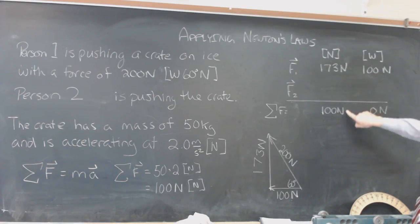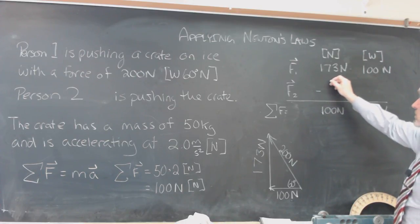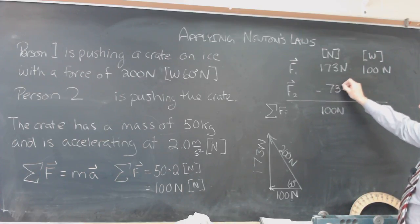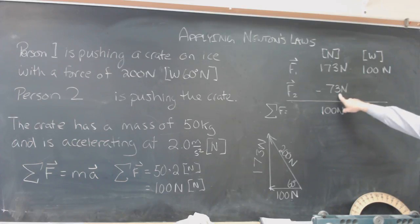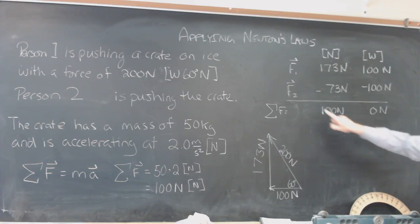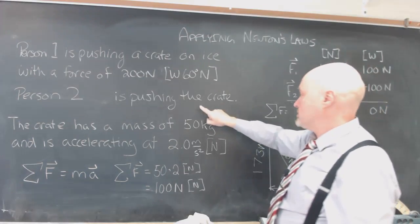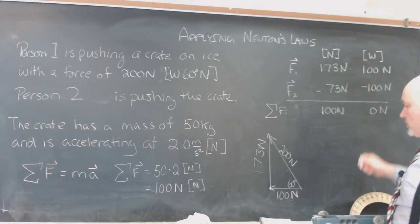173 plus something is 100 Newtons. And so this is actually going to have to be negative 73 Newtons north or 73 Newtons south. And this is actually going to have to be negative 100 Newtons west or in other words, 100 Newtons east to give me my result of 0 Newtons. And so this second person's force, I have figured out the components.